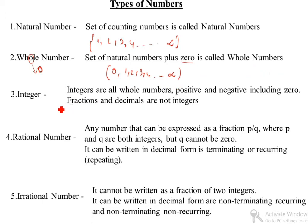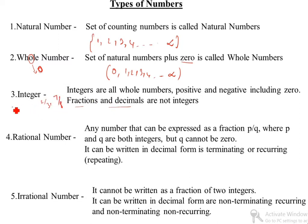Integers. What is an integer? Integers are whole numbers — positive and negative — including 0. Fractions and decimals are not integers. Fractions means 2/3, 7/8. Decimals means 0.25, 0.58. These do not come under integers.